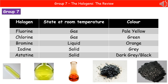One thing they could ask you to do is predict the colour or state, or both, of elements from the table when key values have been deleted. For example, they might ask you to predict the state and colour of fluorine, so you'd notice the patterns in the table and use those to answer.